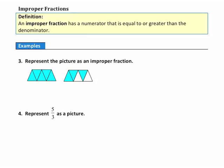Example 3: Represent the picture as an improper fraction. First, I'll draw a fraction bar and determine the denominator by looking at one of the pictures — it's divided into five pieces, so the denominator is five. The numerator is the number of shaded pieces. I have six, seven, eight shaded pieces, so the numerator is eight. In the fraction eight-fifths, the numerator eight is larger than the denominator five, which makes sense because an improper fraction represents more than one whole object.